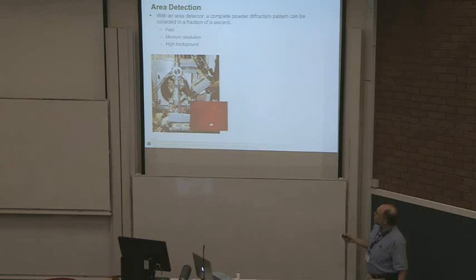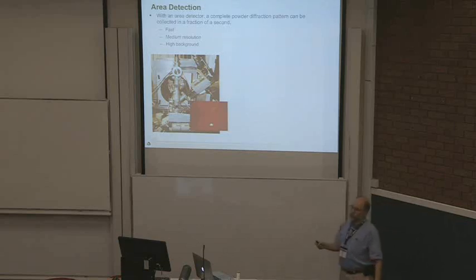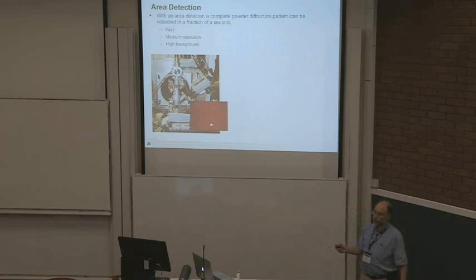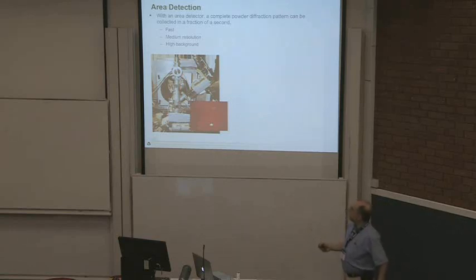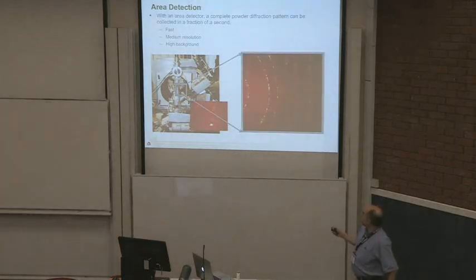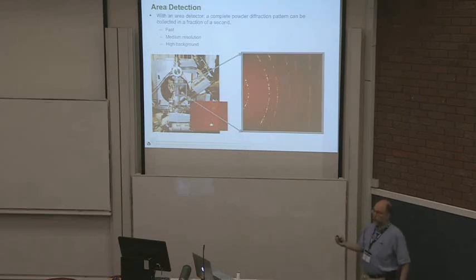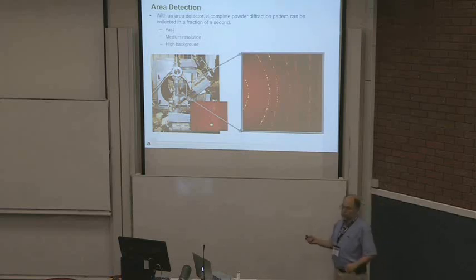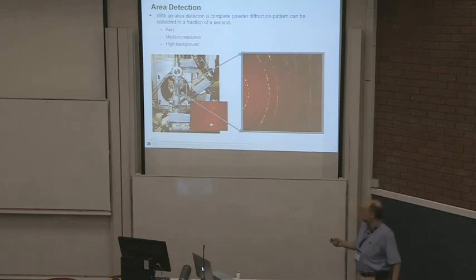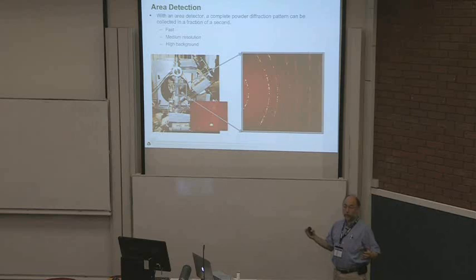Another commonly used method for collecting diffraction data is with area detection. Here is a sample — a silicate glass former just below its crystallization temperature, which is why it's glowing red hot — with an area detector behind it. Zooming in, you can see diffraction from individual crystallites showing up as individual spots, but integrating around these rings gives a fairly good powder diffraction pattern. A typical diffraction pattern is collected in a tenth of a second, and while the resolution is nowhere near high-resolution instruments, you can collect tremendous amounts of data on the fly as you modify your sample.